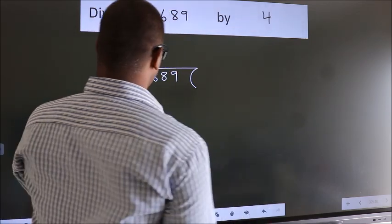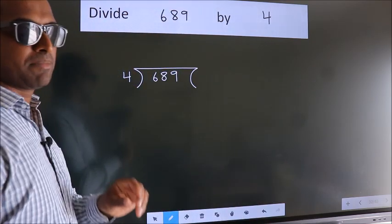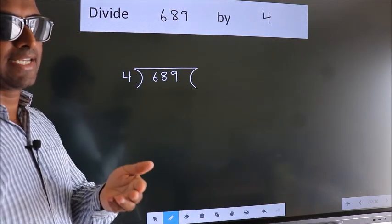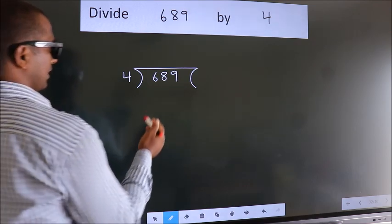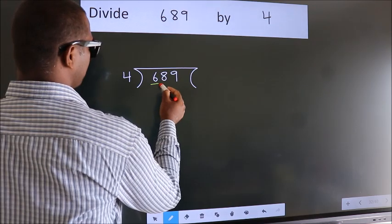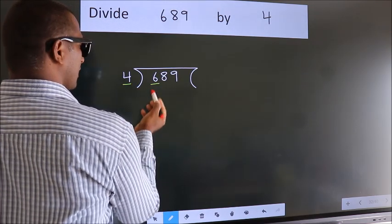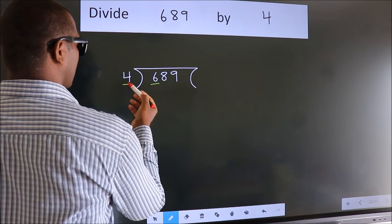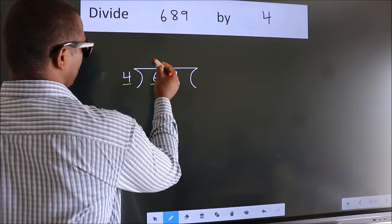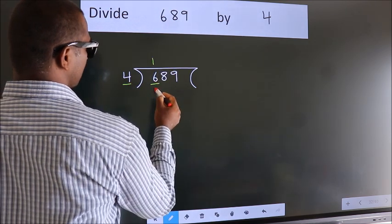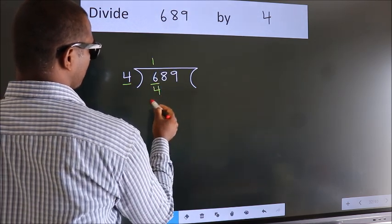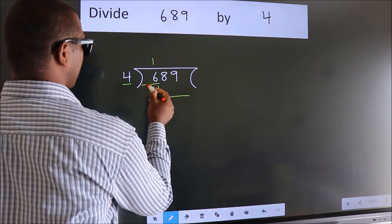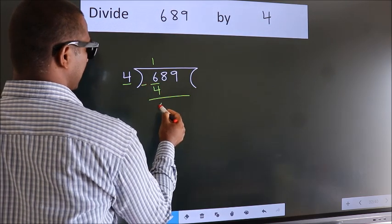This is your step 1. Here we have 6, here 4. A number close to 6 in the 4 table is 4 once, which is 4. Now we should subtract. We get 2.